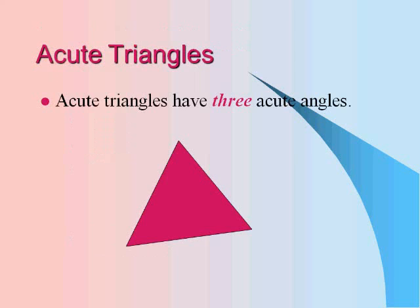Acute triangles have three acute angles. So angles one, two, and three would all be acute angles, which measure less than 90 degrees.